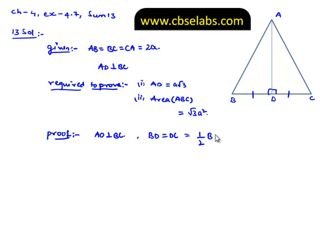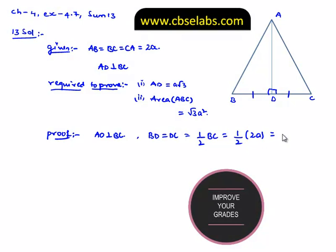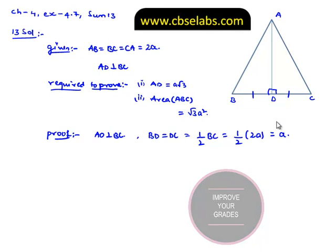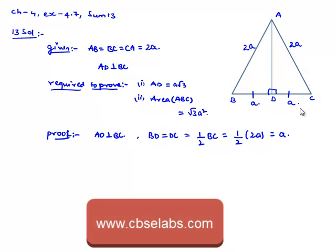That equals half times 2A, which equals A. Therefore we got BD as A, and we have AB as 2A and AC as 2A, and DC also will be A.